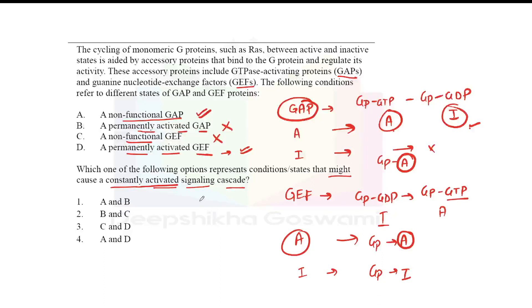So the conditions that cause a constantly activated signaling cascade are: non-functional GAP (option A) and permanently activated GEF (option B). Therefore, our answer is option number 4, which combines both A and B. This is how we understand the G protein mechanism of action.